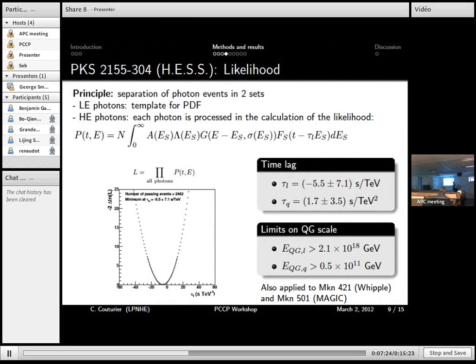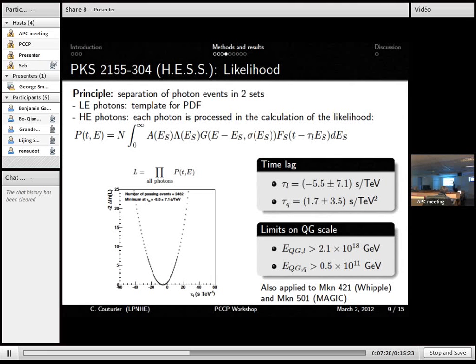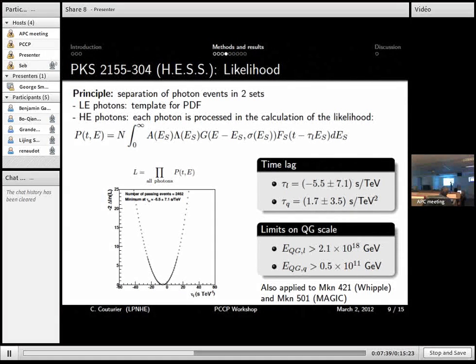So this we do for each photon of the second set. We make the product of all photons, and that's what we get. And the maximum of likelihood will give the best injected time lag.